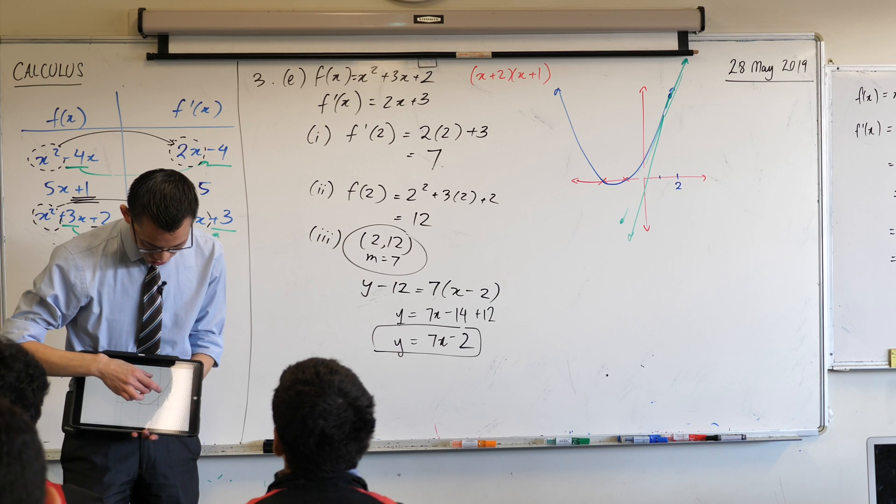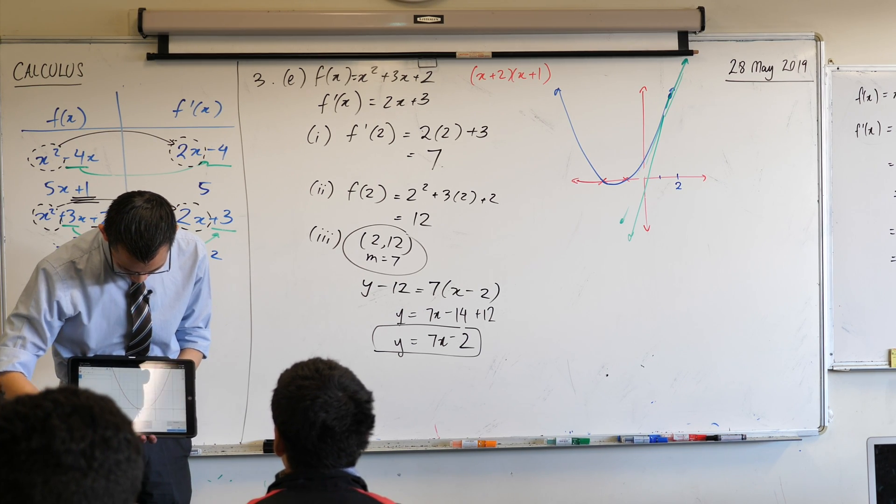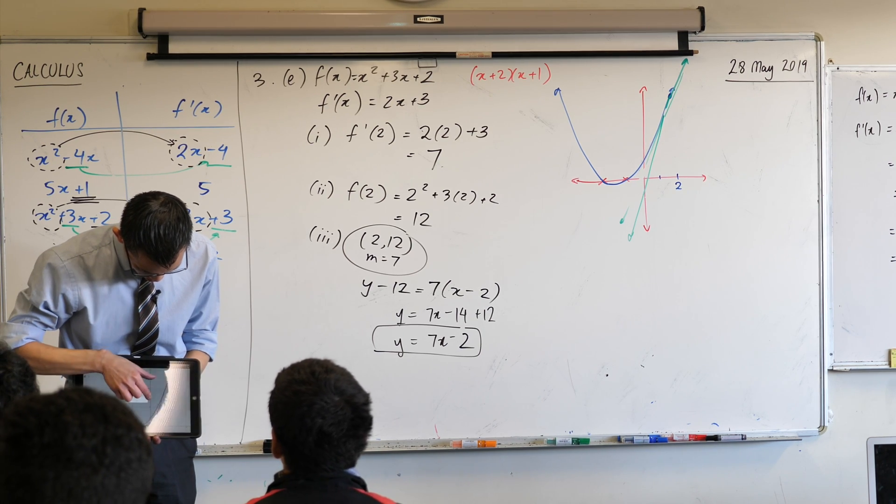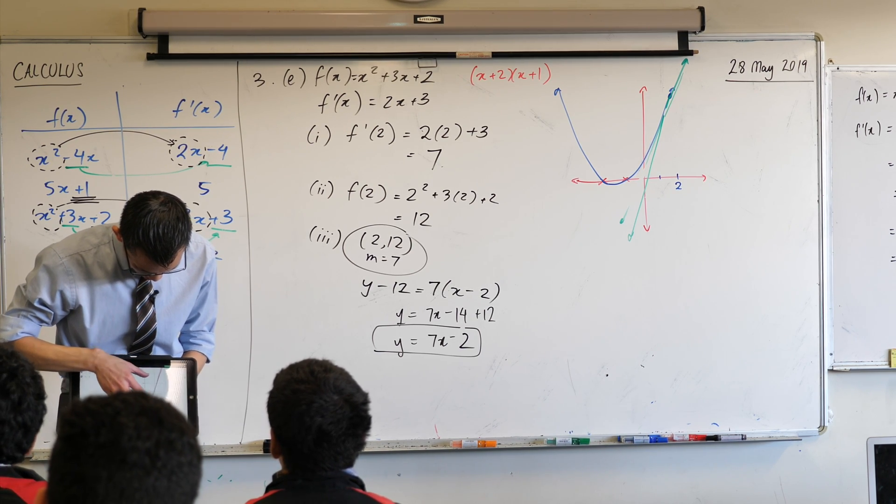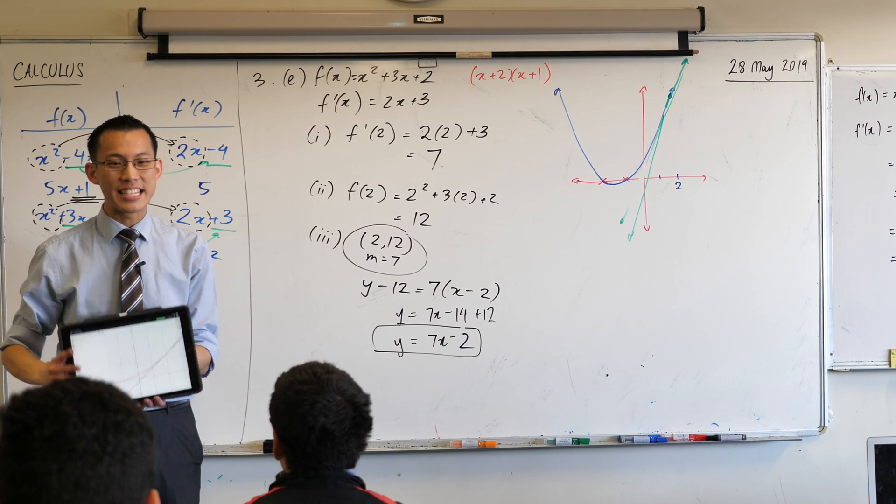And what do we work out as the equation of the tangent? 7x minus 2. Perfect. Whoops. Go away. There it is. Right there. Nailed it. See that? It's not close. It's exact.